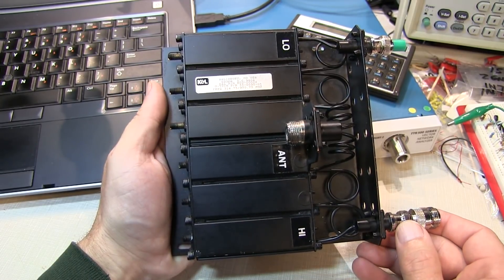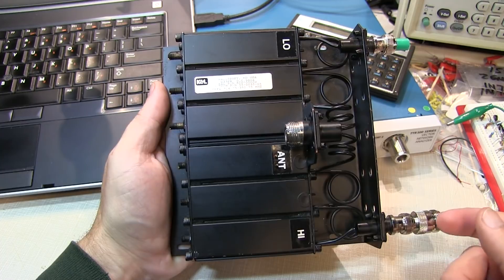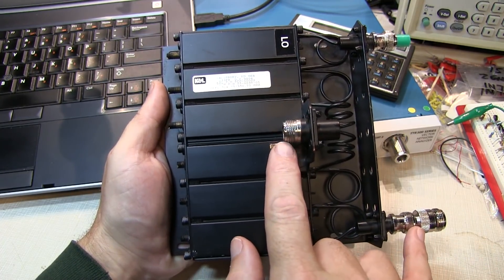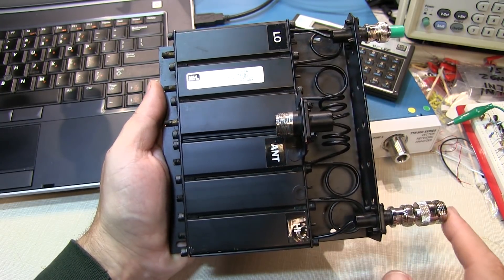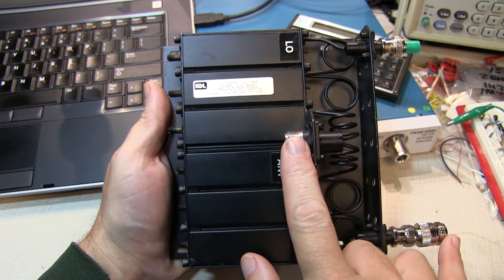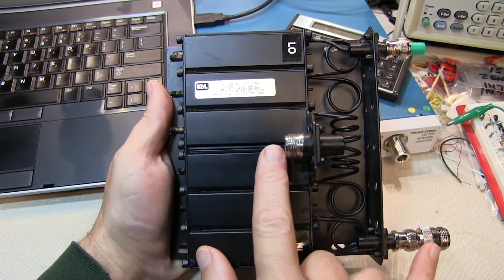A duplexer like this is a passive device, so the response through a given path will be the same regardless of whether we're sending a signal in that direction or the other direction. So it almost doesn't matter which side we hook the tracking generator up to and which side we hook the spectrum analyzer up to. It is important though in many cases to ensure that you terminate the unused port when you're tuning one side.